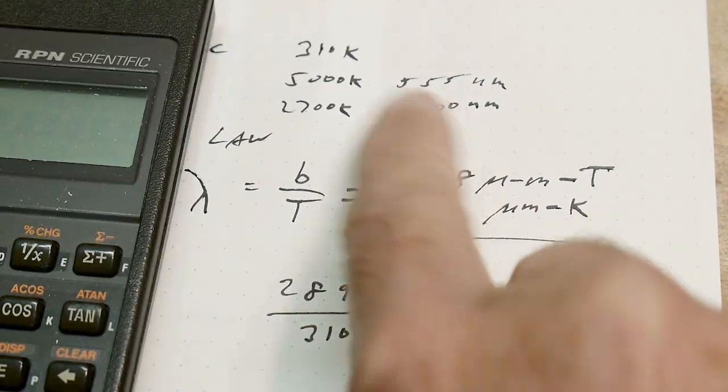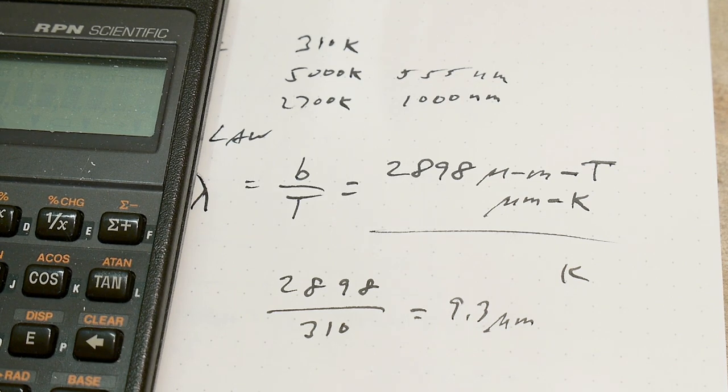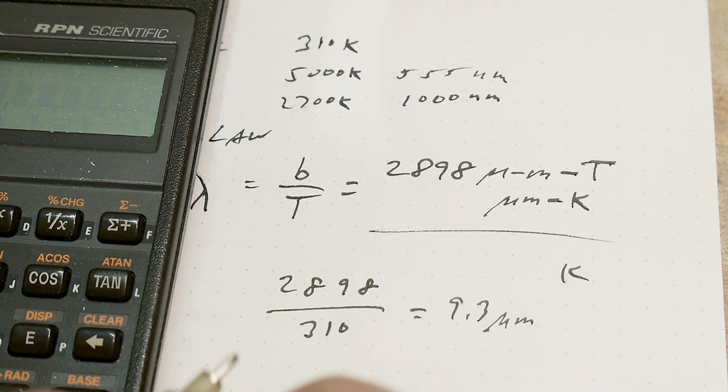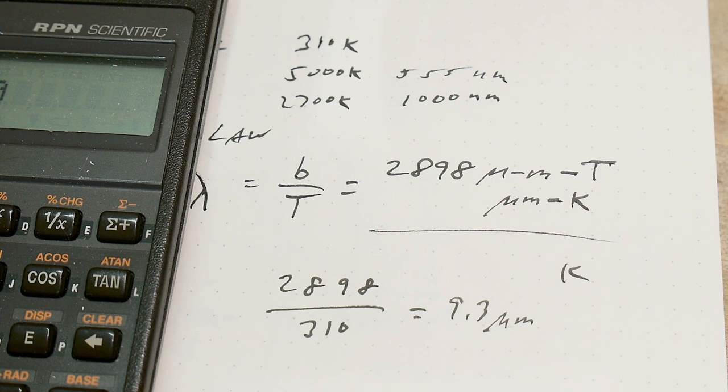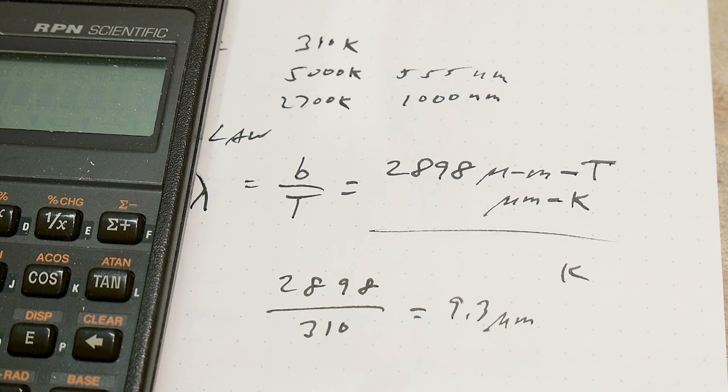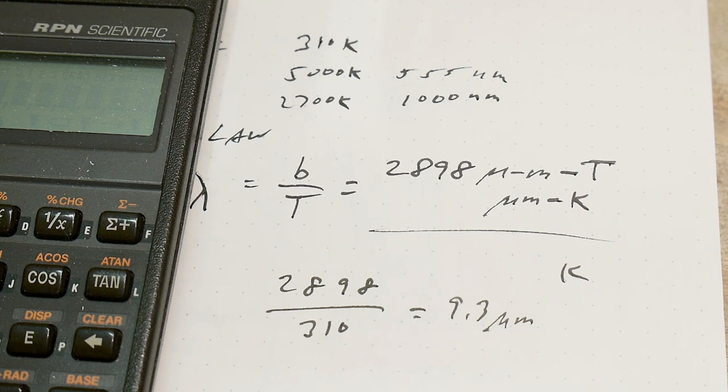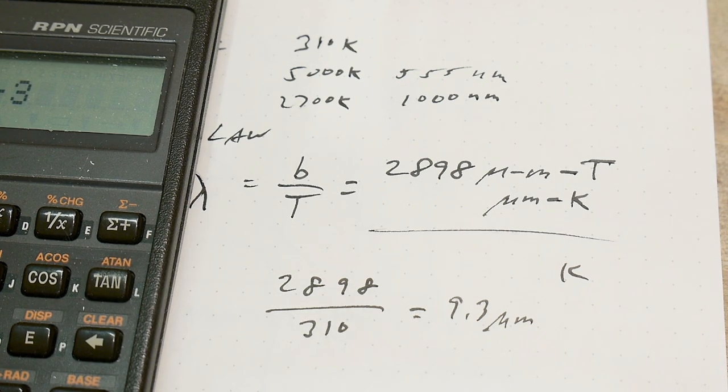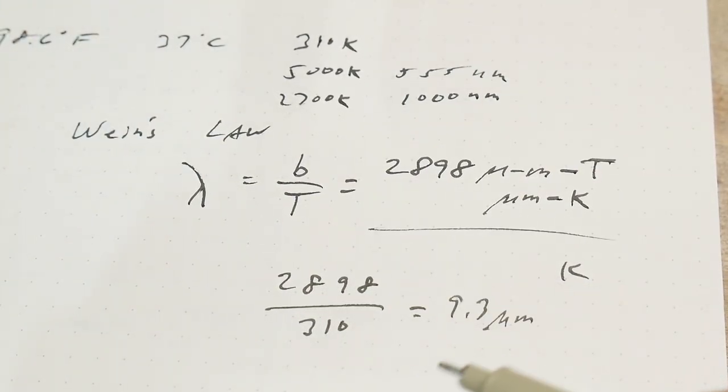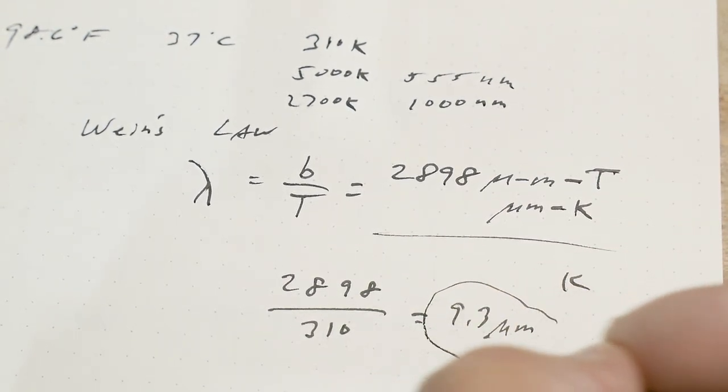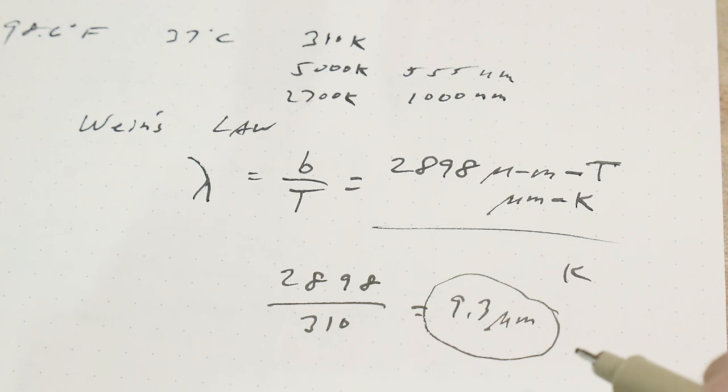We could do it with our 2700 Kelvin bulb - 2.898 divided by 2700 is 1.073, so that works. And if we divide 2.898 by the sun's temperature, say 5000 degrees, we get 579 nanometers. It all checks out. Wien has this equation, and 9.3 microns is the wavelength we'd like our camera to see.